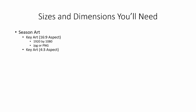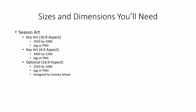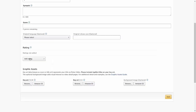There is key art you'll need to create that is a 4x3 aspect ratio — 1600x1200, JPEG or PNG. There is also an optional file with a 16x9 aspect ratio — 1920x1080, JPEG or PNG — and this is a background image that only appears on devices to convey mood. You'll see the request for these three when you are uploading your image.